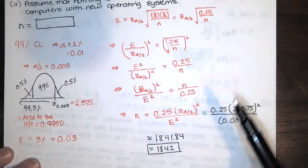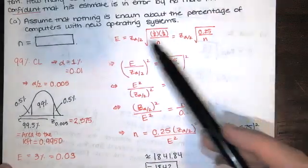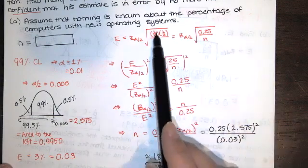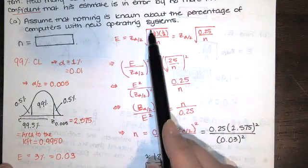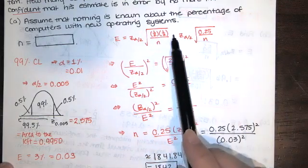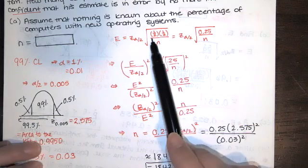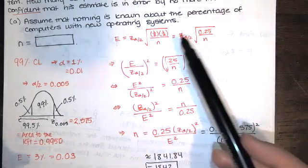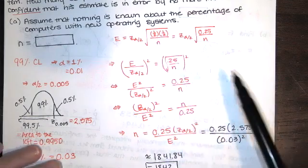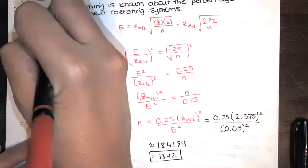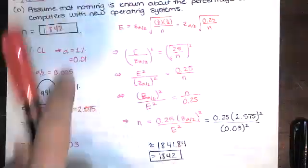This is provided that we don't really know anything about the percentage of computers that have new operating systems. So that percentage or proportion of computers that have new operating systems can be assumed to be half of them. And then the other half would be those that don't. So there's our P hat and our Q hat. If we have no background information for this, that's our assumption. And that's how we calculate n. So we get 1,842 there.